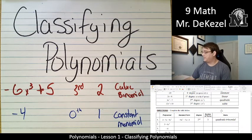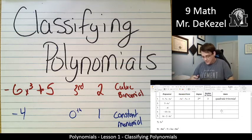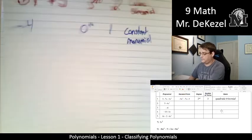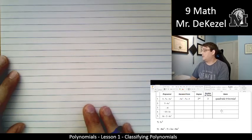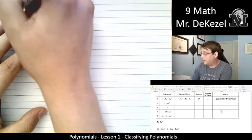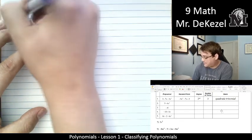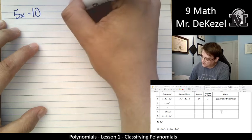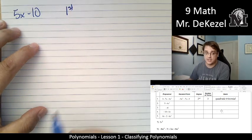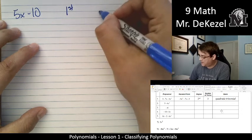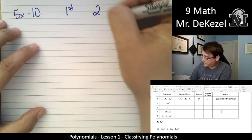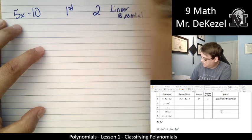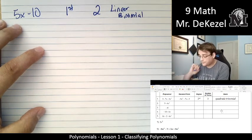All right, let's do a couple more. Next in standard form, we would have 5x - 10. The highest is 1, so it is first degree, which is linear. It has two terms, so it's a binomial. So, this is a linear binomial.